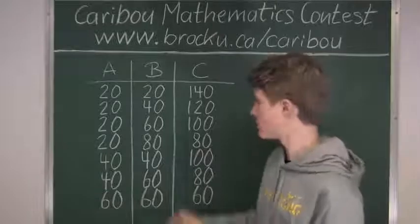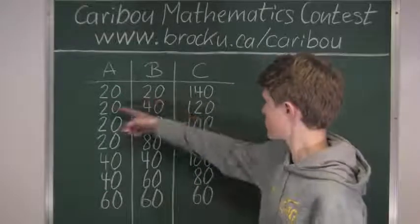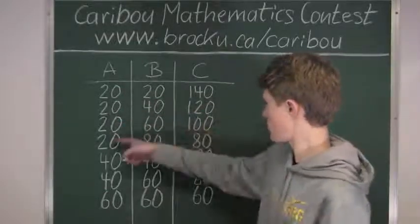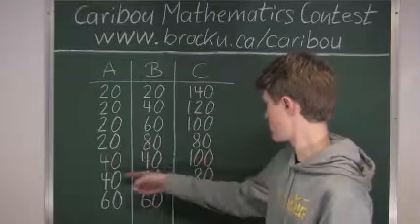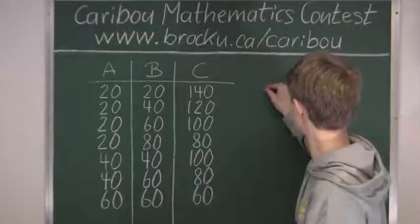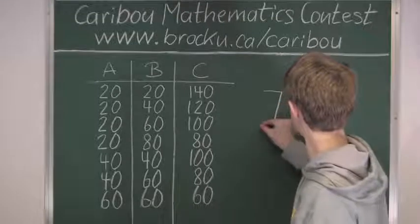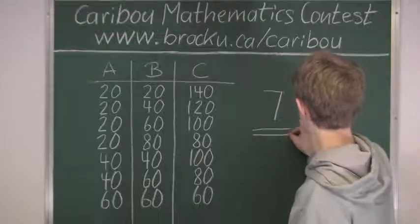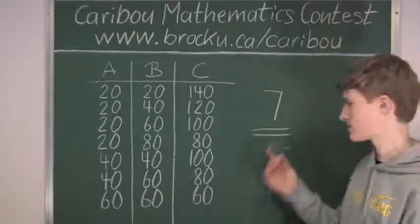So now we will count them up. We have 1, 2, 3, 4, 5, 6, 7 combinations. So we know that the answer is 7.